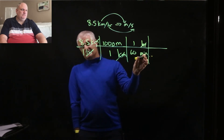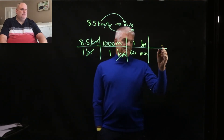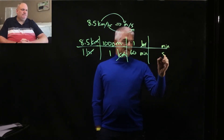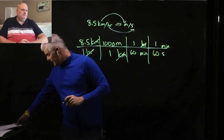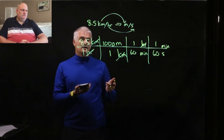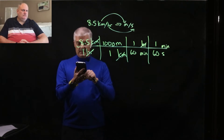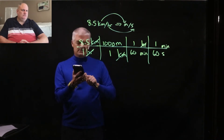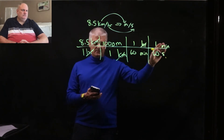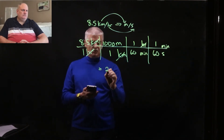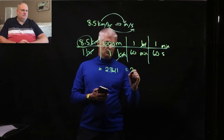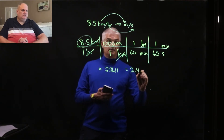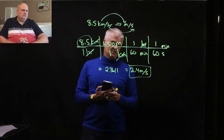Since the minutes are on the bottom and I want them to cancel, minutes go on the top and seconds on the bottom. The minute's the bigger unit — he gets a one, and this is 60 seconds. Numbers on top multiply, numbers on the bottom divide. So I take 8.5 times 1,000, divided by 60, divided by 60. I get 2.3611, and with only two significant digits, that's 2.4 meters per second.